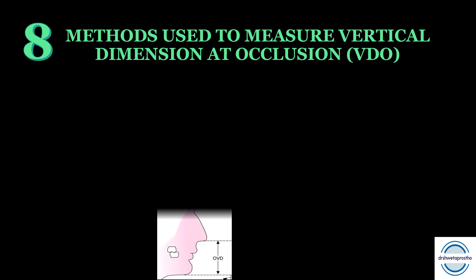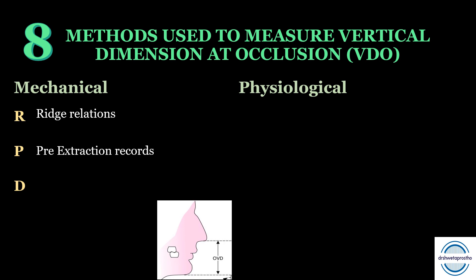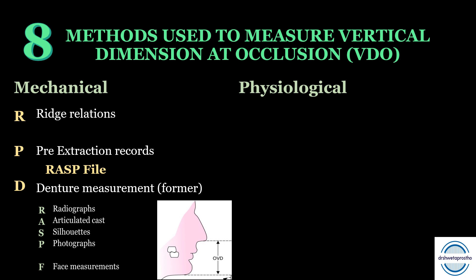The eighth mnemonic is for the methods used to measure the vertical dimension at occlusion (VDO). The methods are divided into mechanical and physiological categories. For mechanical methods, the mnemonic is RPD: R for ridge relations, P for pre-extraction records, and D for denture measurements (former denture measurements). Pre-extraction records can be remembered by the word RASP FILE: R for radiographs, A for articulated cast, S for cell hoods, P for photographs, and F for face measurements.